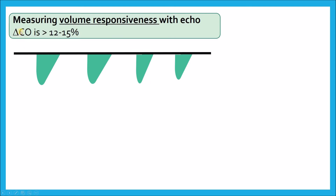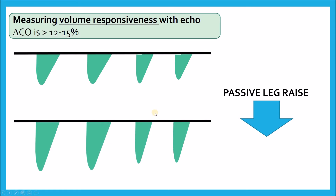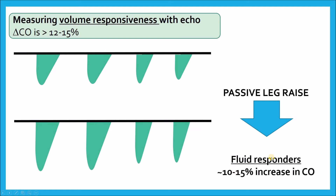There's a way to determine responsiveness to a fluid bolus without giving a fluid bolus — and that's a passive leg raise. If I give a passive leg raise, I can now look at my LVOT VTI after the leg raise. In patients who are going to be fluid responders, I'm going to see about a 10 to 50% increase in cardiac output. Of course, if there's some variability in the VTI to begin with, I'll need to average a few LVOT VTIs over the respiratory cycle before and after the passive leg raise.